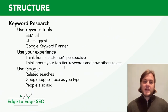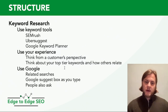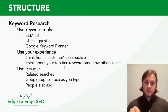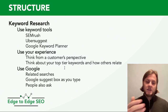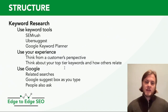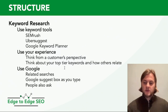Also use Google's related searches — every time you type a keyword into Google you get related searches at the bottom of the page, and the Google Suggest box as you start typing. There's also the 'People Also Ask' section, which contains questions related to the keyword you've searched. Within those questions there are also keywords you could think about as well.